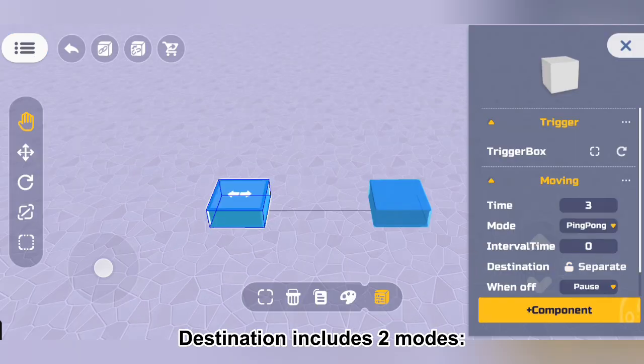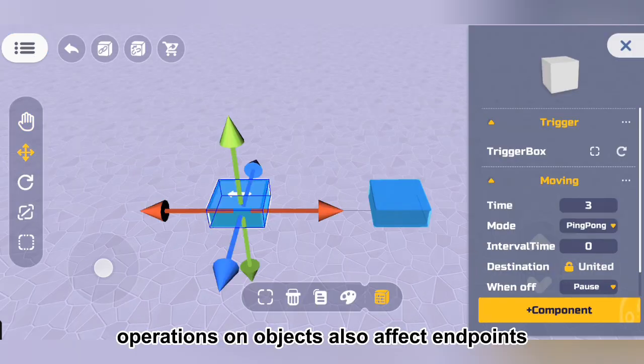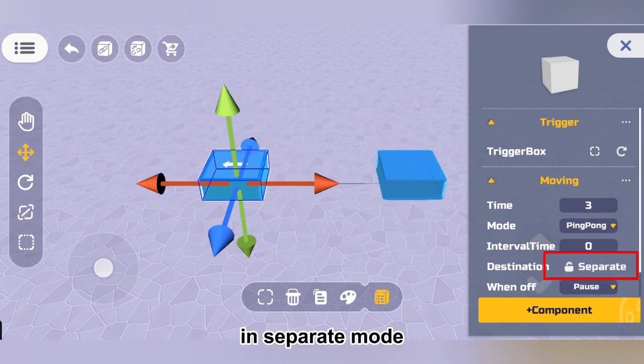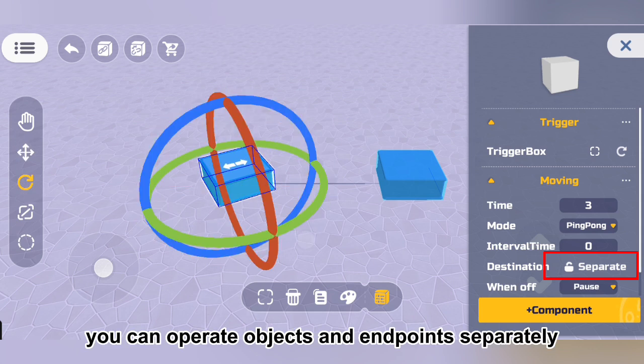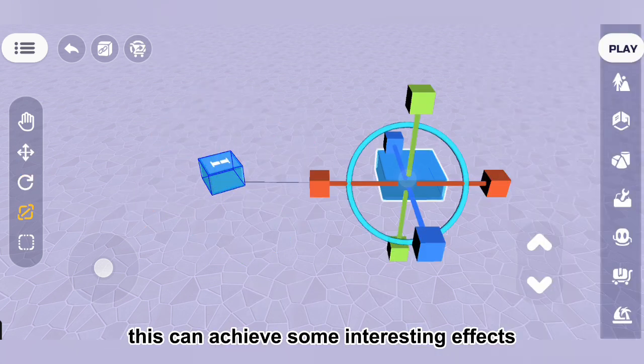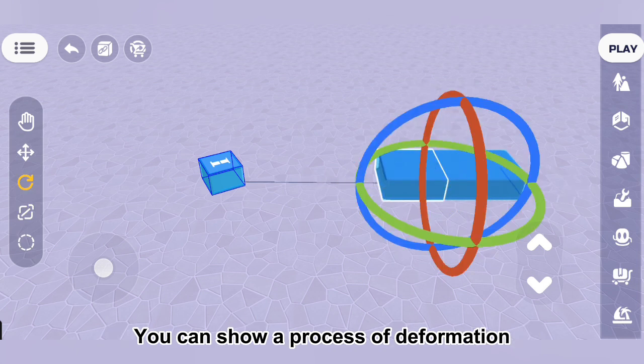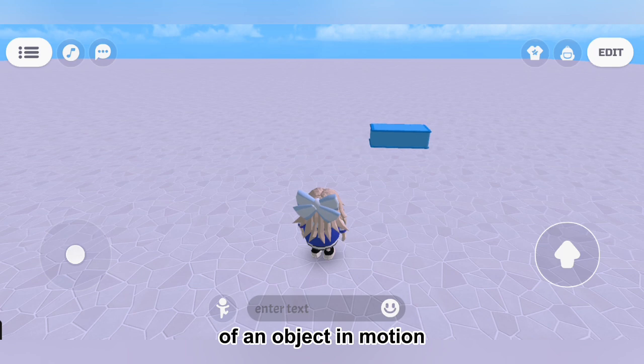Destination includes two modes. In united mode, operations on objects also affect endpoints. In separate mode, you can operate objects and endpoints separately. This can achieve some interesting effects, such as stretching or rotating them separately. You can show a process of deformation of an object in motion.